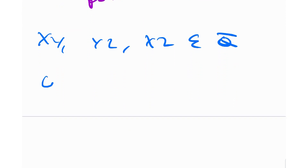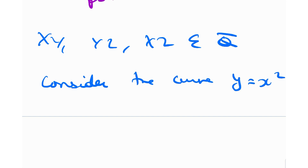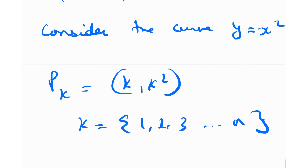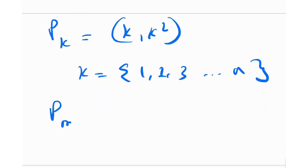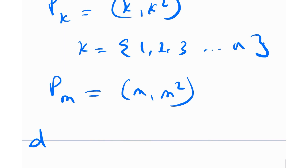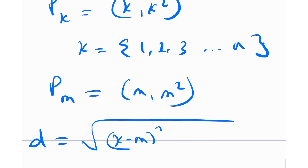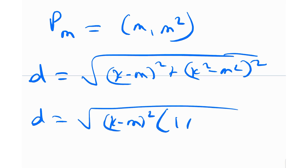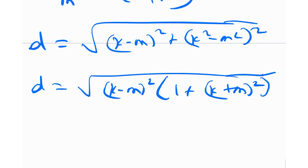To handle the irrational side length condition, I'm going to consider the curve y = x². I can define any point P_k on the curve as (k, k²), where k runs from 1, 2, 3 all the way up to n since we have n points. Similarly I can define a point P_m as (m, m²), and both points lie on the parabola. The distance between these two points is: d = √[(k−m)² + (k²−m²)²].